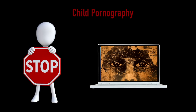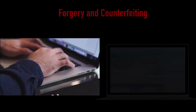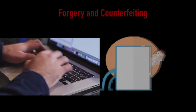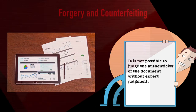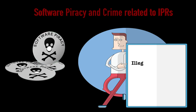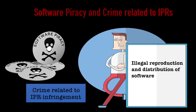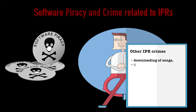Forgery and counterfeiting — it is the use of a computer to forge and counterfeit documents. With the advancement in hardware and software, it is possible to produce counterfeits which match the original document to such an extent that it is not possible to judge the authenticity of the document without expert judgment. Software piracy and crimes related to IPRs — software piracy is the illegal reproduction and distribution of software for personal or business use. It comes under crime related to IPR infringement. Some other crimes under IPR infringement include downloading of songs, downloading movies, etc.